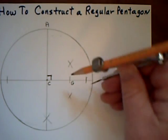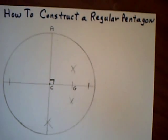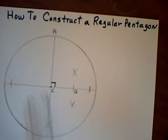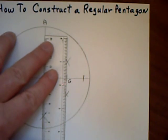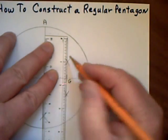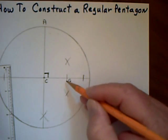And then I go over to here, and I do an arc below, and an arc above. And then I take my ruler, and instead of drawing the whole line all the way down from here to here, I just draw this part of the line, because I'm trying to find the point G.